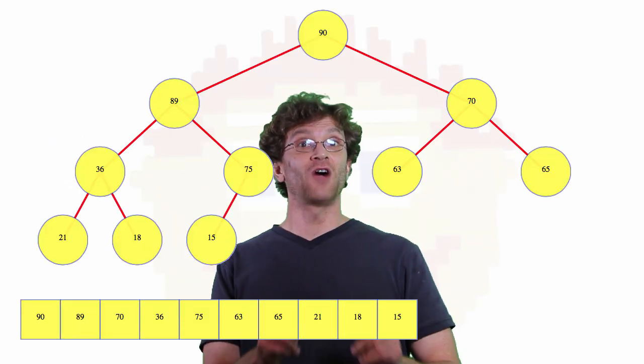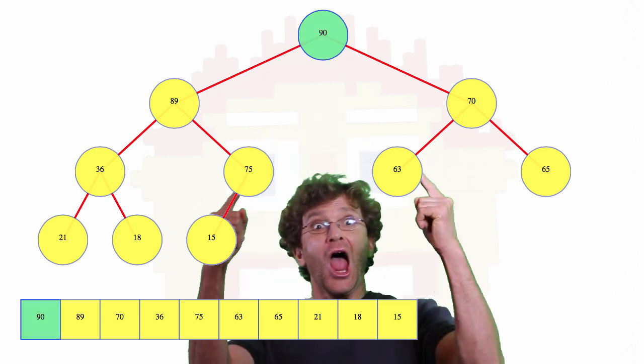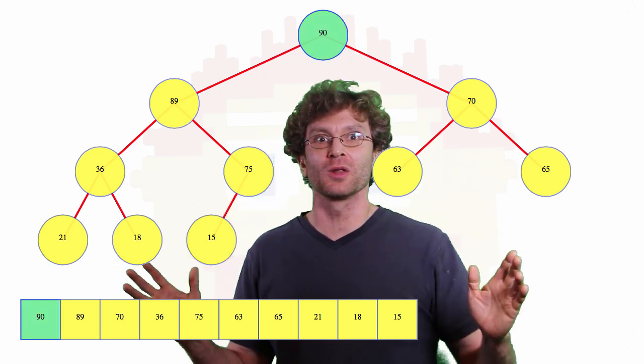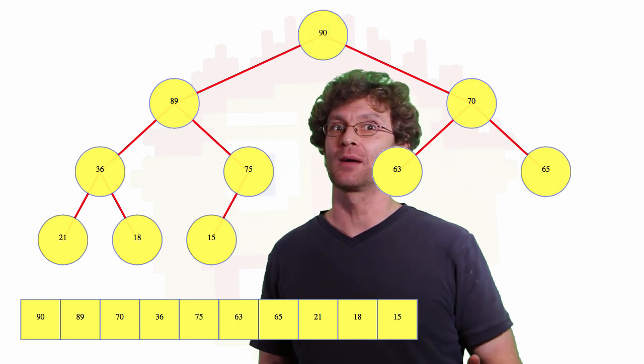Finding the maximum node is going to be the easiest operation we have, because BAM! There it is. It's right in the first place. It's at the root. First spot of the array, can't go wrong. Easiest operation there is.